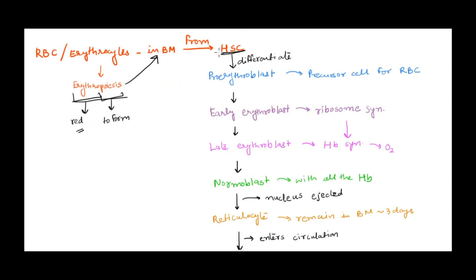This hematopoietic stem cell first differentiates into proerythroblast. The suffix 'blast' means we're talking about a precursor cell. Any cell where we put the suffix blast shows it as a precursor cell.